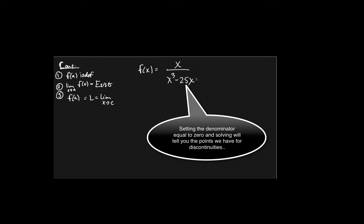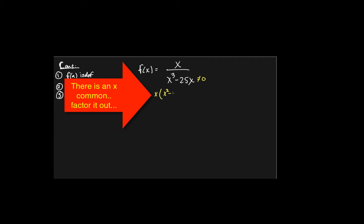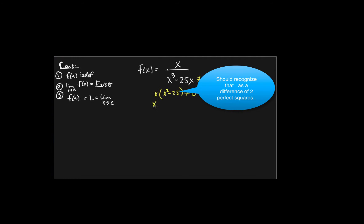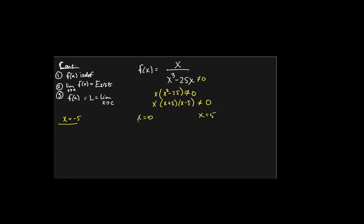So what you want to do is you want to factor the denominator. So we know the denominator can't equal zero, so we factor out the x, you get x squared minus 25. And x plus 5, x minus 5.